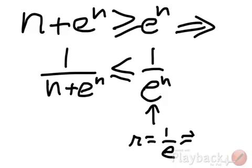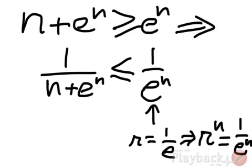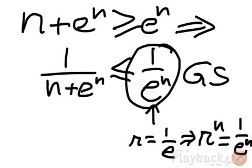Because if you raise both sides to the power n, you're going to get 1 over e^n. See? Since this is now established as being an element of a geometric sequence, this implies, then, that we have a series.